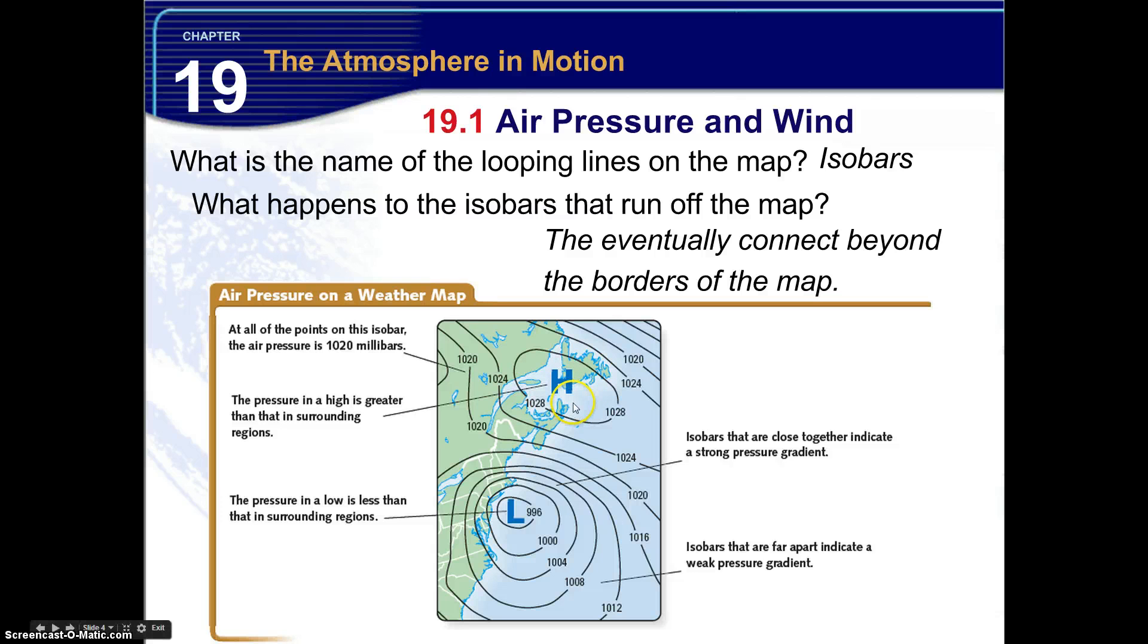Now the pressure in a low is less than the surrounding regions. So we go back down here, and then the pressure decreases until you get to this point right here, the 996 and within. Isobars that are close together indicate a strong pressure gradient. And isobars that are farther apart indicate a weak pressure gradient.